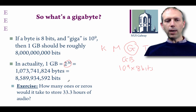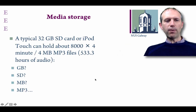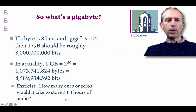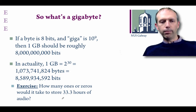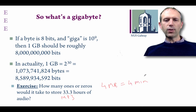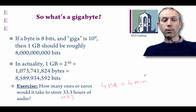As an exercise, imagine how many ones and zeros it would take to store 33.3 hours of audio given the values from the previous slides. Have a go at this yourself — how many ones and zeros would it take to store 33.3 hours of audio given the MP3 compression numbers we talked about? Just assume these are MP3 files and that typically a 4 megabyte file corresponds to 4 minutes — so roughly 1 megabyte per minute. So how many ones and zeros would 33.3 hours correspond to?